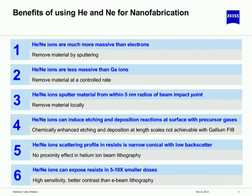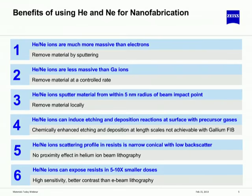The benefits of using helium and neon for nanofabrication: helium and neon ions have greater mass than electrons. People have used electrons for fabricating structures via sputtering, but the mass is not sufficient to induce sputtering in materials other than thin films. Helium and neon have greater mass than electrons and are more efficient at sputtering. They are less massive than gallium, so they remove material at a more controlled rate and in a more precise manner. You can also induce deposition and etching reactions using chemical precursors, similar to gallium.